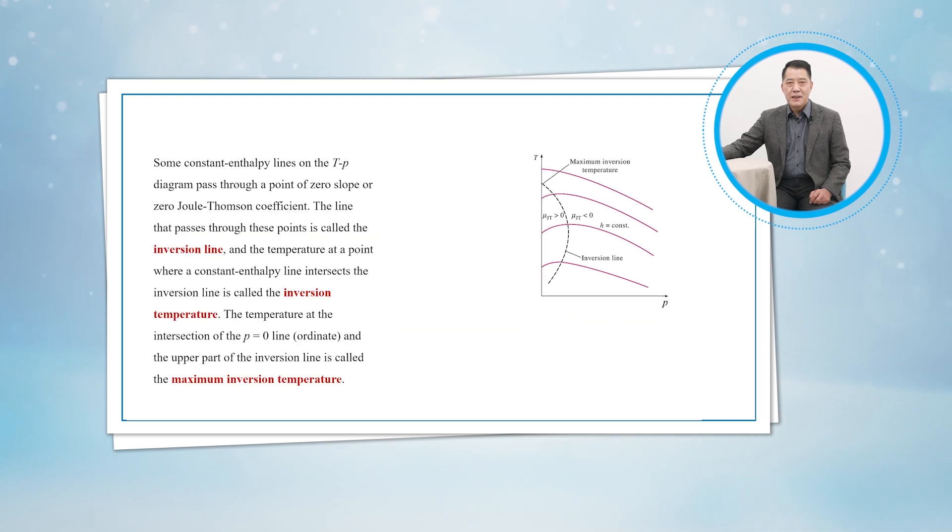Some constant enthalpy lines on the T-P diagram pass through a point of zero slope, or zero Joule-Thomson coefficient. The line that passes through these points is called the inversion line. The temperature at a point where a constant enthalpy line intersects the inversion line is called the inversion temperature. The temperature at the intersection of the P equals zero line and the upper part of the inversion line is called the maximum inversion temperature.